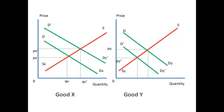Look at the effect on price in the short run. The price of good X rises from PX to PX prime, and the price of good Y falls from PY to PY prime. More of X is supplied — the quantity rises from QX to QX prime. Less of Y is supplied, so the quantity falls.